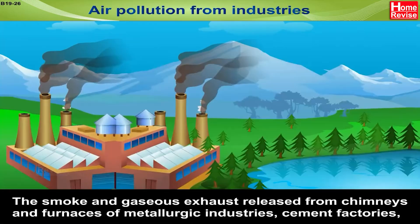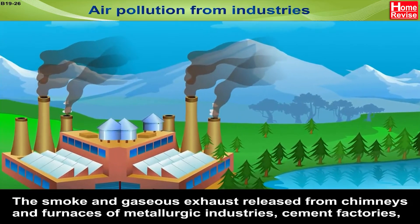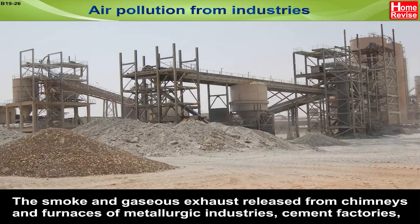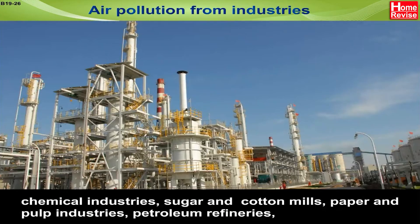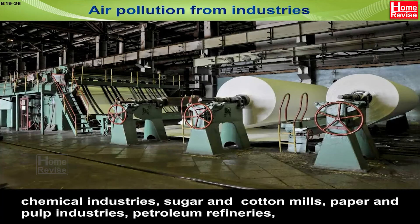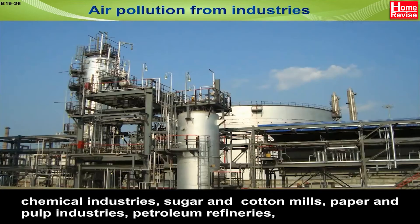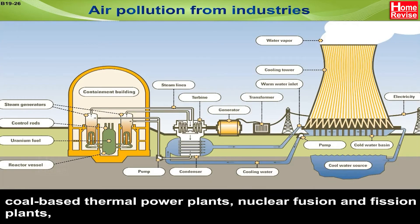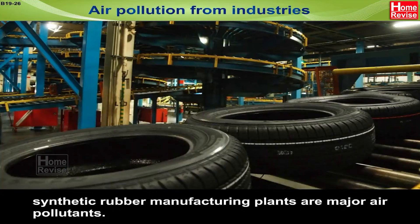Air pollution from industries: smoke and gaseous exhaust released from chimneys and furnaces of metallurgic industries, cement factories, chemical industries, sugar and cotton mills, paper and pulp industries, petroleum refineries, coal-based thermal power plants, nuclear fusion and fission plants, and synthetic rubber manufacturing plants are major air pollutants.